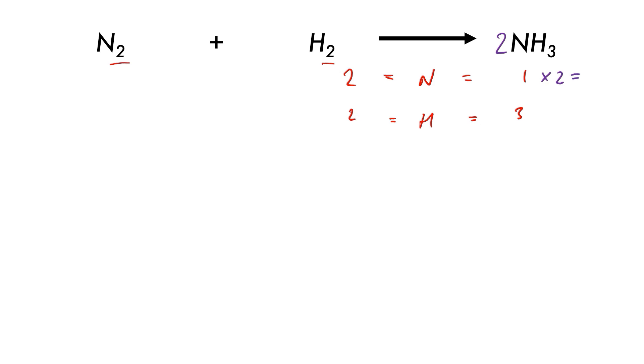Multiply that by two gives us two nitrogens, and multiply this number of hydrogens by two gives us six hydrogens.